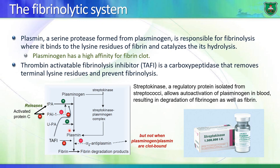A major player in fibrinolysis is plasmin, which degrades fibrin into smaller products. Plasmin associates with fibrin and is activated from plasminogen, which has high affinity for fibrin clots and gets activated when it associates with a fibrin clot. Once plasmin gets released from the fibrin clot, it is inactivated by alpha-2 anti-plasmin. However, if plasmin is bound to the fibrin clot, anti-plasmin does not have access to it and cannot inhibit it.